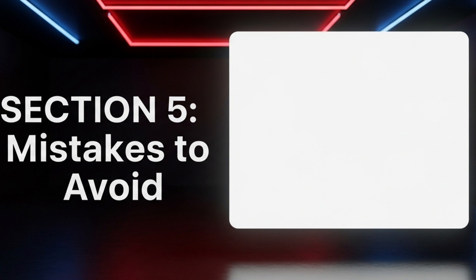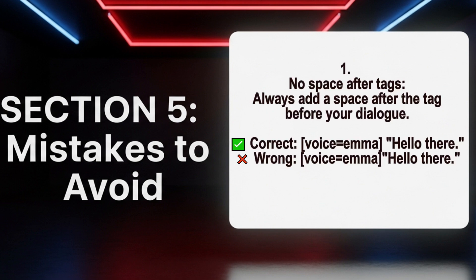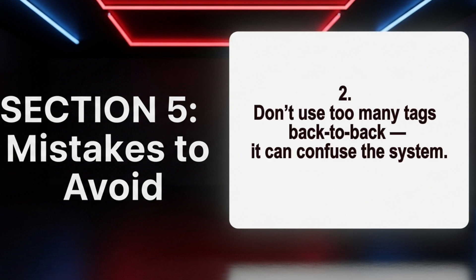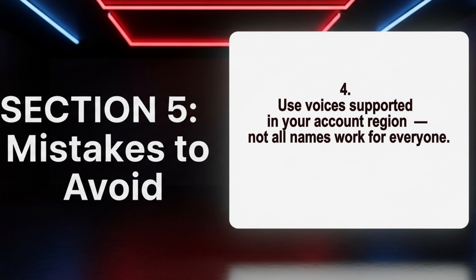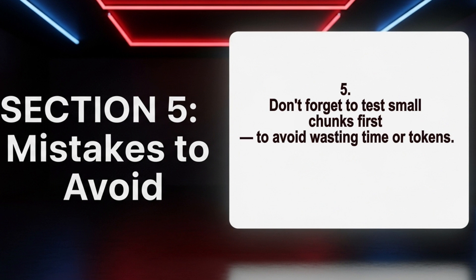Section 5: Mistakes to Avoid. 1. No space after tags — always add a space after the tag before your dialogue. 2. Don't use too many tags back-to-back; it can confuse the system. 3. Check your spacing and spelling — a small typo can break the effect. 4. Use voices supported in your account region; not all names work for everyone. 5. Don't forget to test small chunks first to avoid wasting time or tokens.